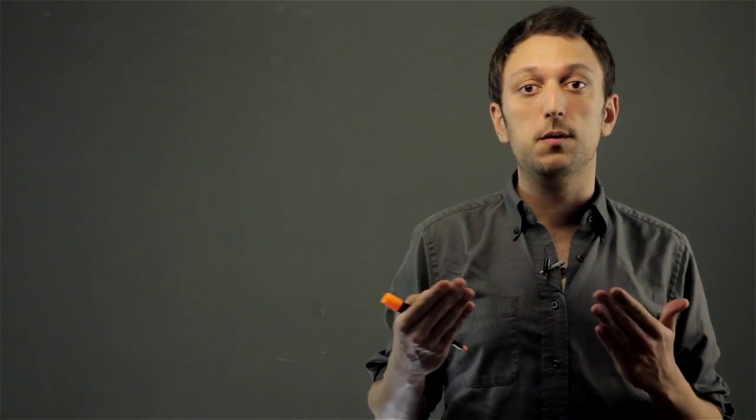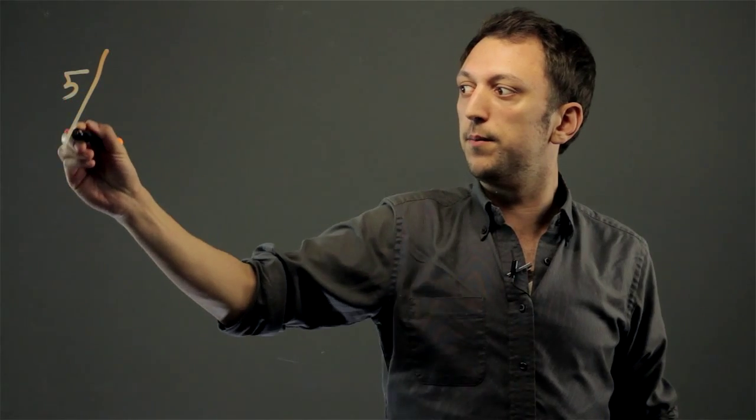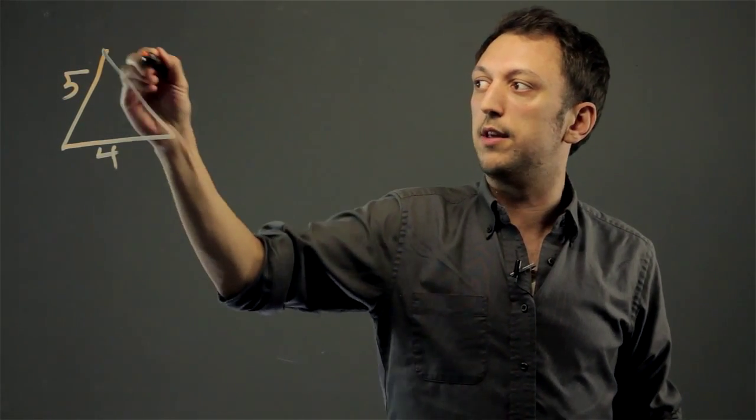So SSS refers to side, side, side, meaning you've been given all three sides. So let's say you have a triangle that is 5, 4, 6.